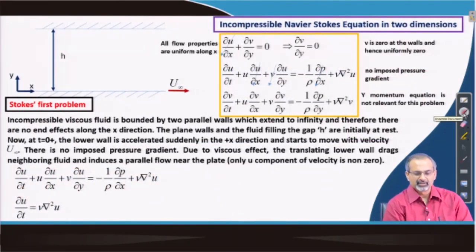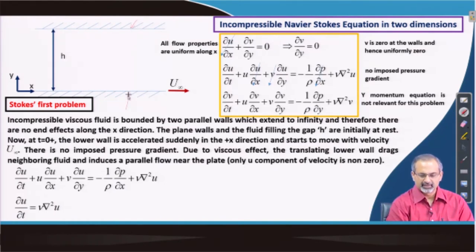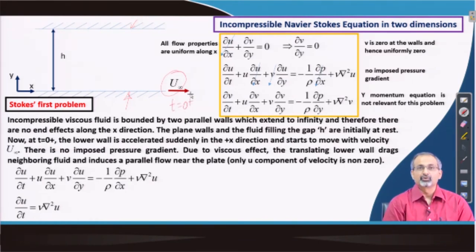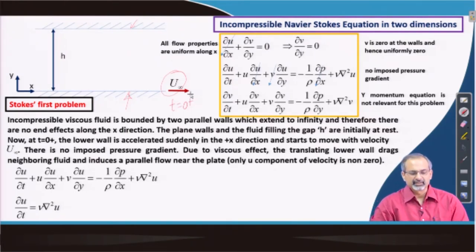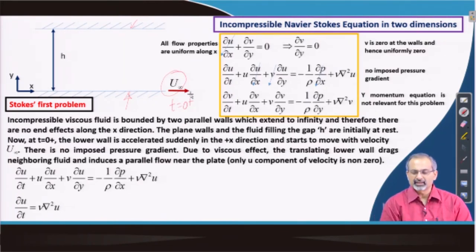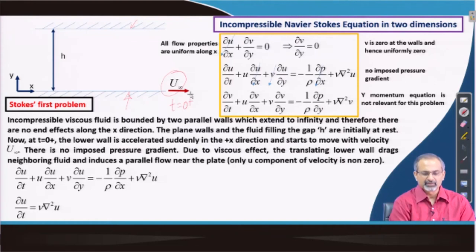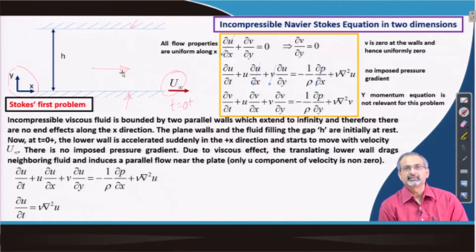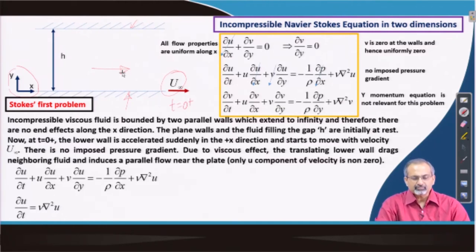The problem is placed with two parallel plates. The lower plate moves with a certain velocity starting at t equal to 0 plus; before that both plates and the intermediate fluid are at rest. It is an incompressible viscous fluid, so we invoke the incompressible Navier-Stokes equations in two dimensions — x along the length of the plates and y normal to them — with a gap of h separating the two walls. This problem is known as the Stokes first problem.